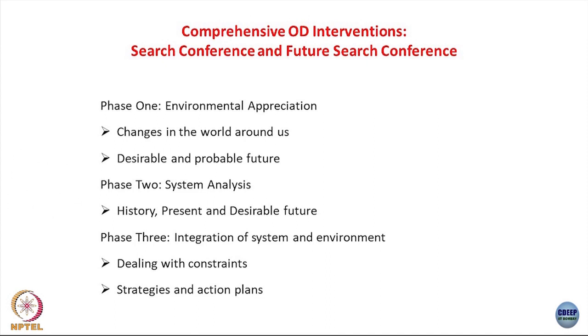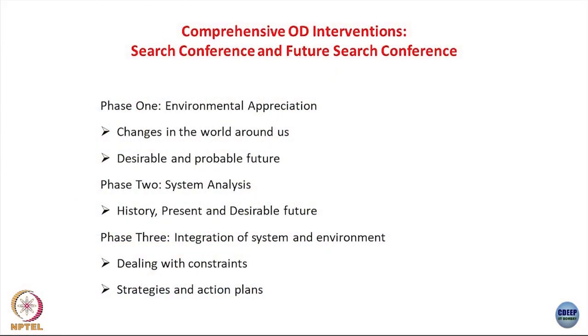Our first example of the large group intervention is the future search conference. Phase one of this process is environmental appreciation. Large numbers of people are invited for these meetings and are generally grouped into smaller groups according to their hierarchy, function, and expertise. In the first stage, people look at environmental appreciation — what changes in the world around them are taking place — and in light of those changes, what is the desirable and probable future. These two things are articulated by various groups, who then assemble again in the large group and report back.